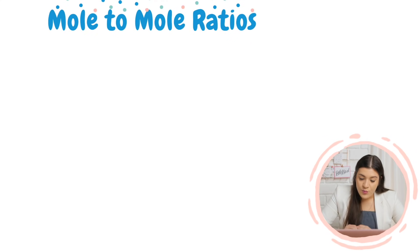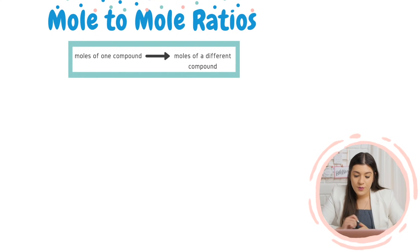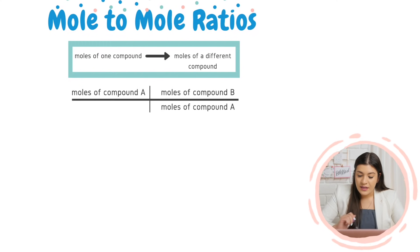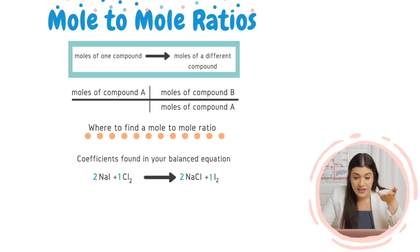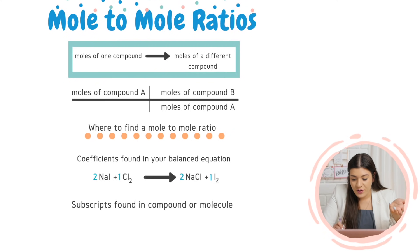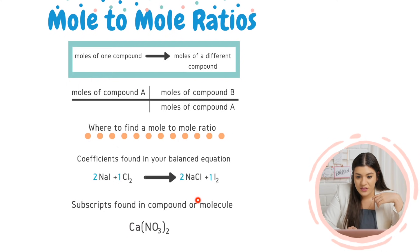All right, mole to mole ratio, let's talk about that one. So mole to mole ratio, as we said before, we always use it when we're trying to change the compound. And this is going from moles of one compound to a different one. And we always align our units across so they can cancel. And then this is going to be where you're going to find a mole to mole ratio. So there's actually two different places that you're going to find a mole to mole ratio. The first one is going to be any coefficients that are in our balanced equation. And if there is nothing in front, then it's going to be a one.